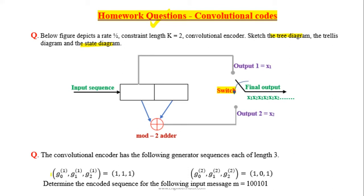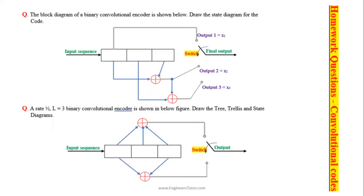In the second question, generator sequences are given and you need to find the output of the encoder for a given message signal. The block diagram of the convolutional encoder is shown here — find the state diagram of the convolutional encoder.